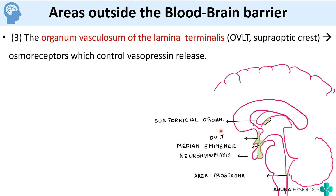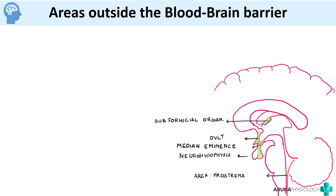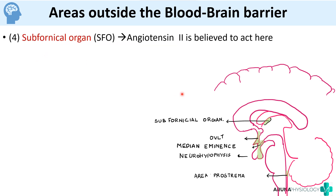The OVLT (organum vasculosum of the lamina terminalis) contains osmoreceptors that control vasopressin release, so it must detect the osmolality of blood — hence no blood-brain barrier here. The subfornical organ is where angiotensin II is believed to act, so again it must sense blood composition, and therefore has no blood-brain barrier. These are the four areas devoid of blood-brain barrier: median eminence and neurohypophysis, area postrema, OVLT, and subfornical organ. The pineal gland also lacks BBB but is not considered part of the brain.